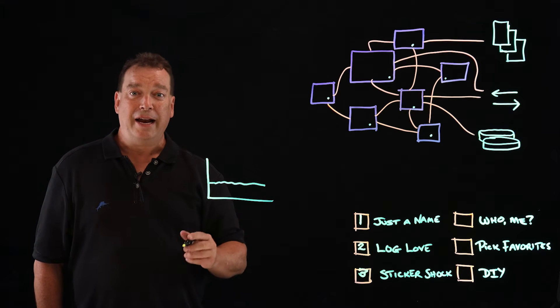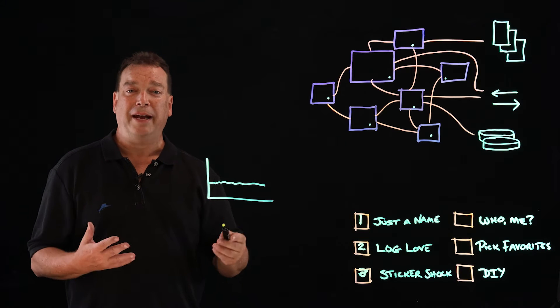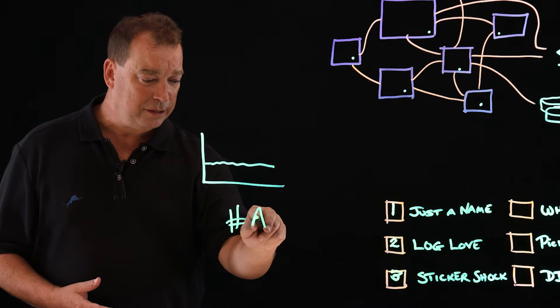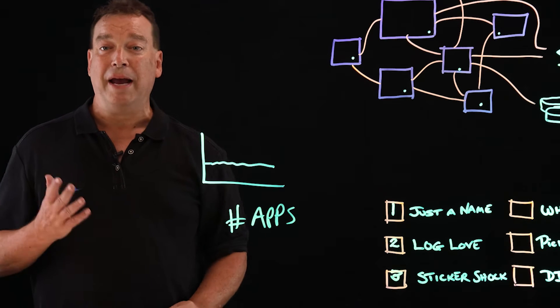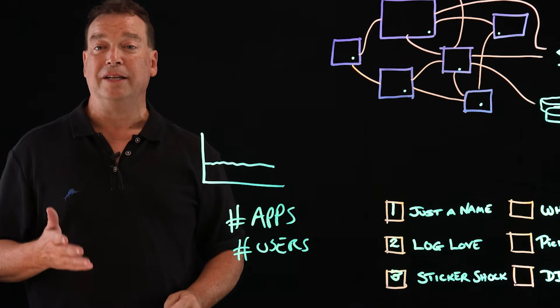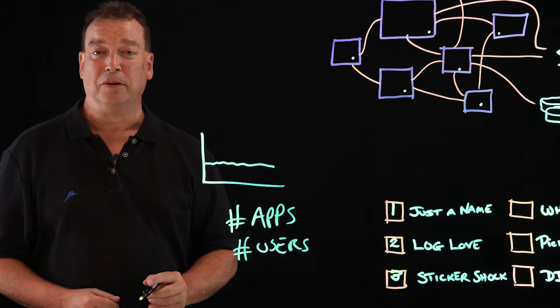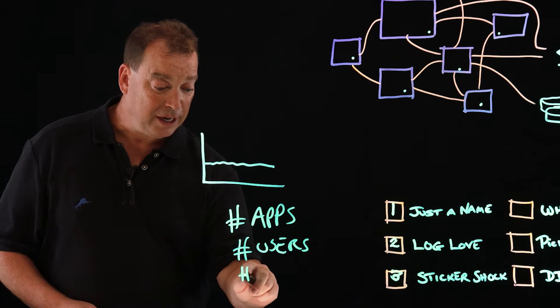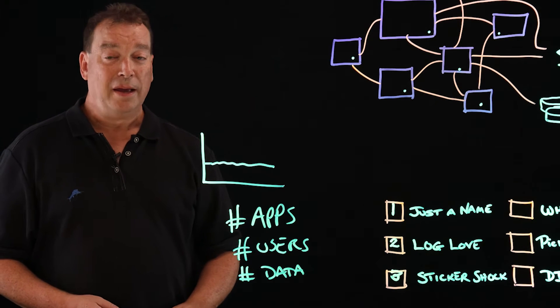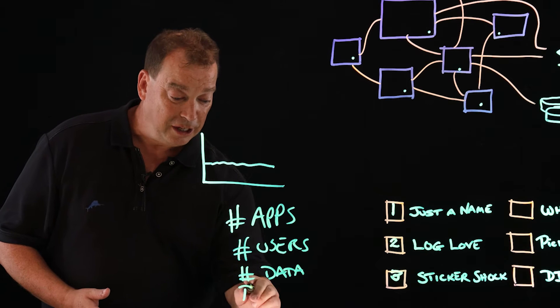But there is another way that some observability solutions and monitoring solutions charge, and that is to charge you for other things around the system, such as the number of applications that you're running, or maybe the number of users that you have using your product that's actually using the observability tool themselves. Maybe they're just looking at the amount of data that you're sending through the system.